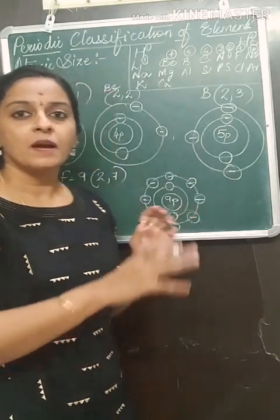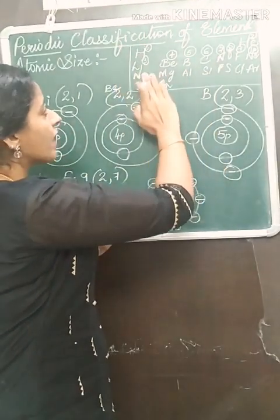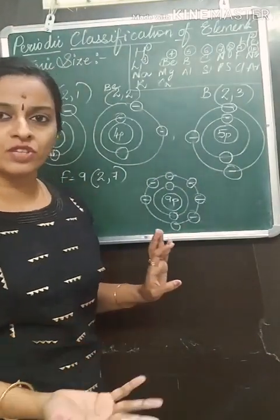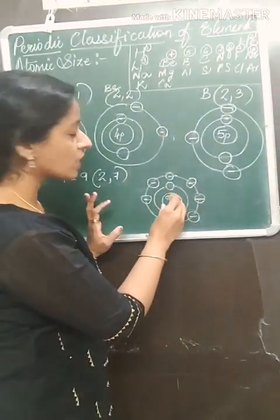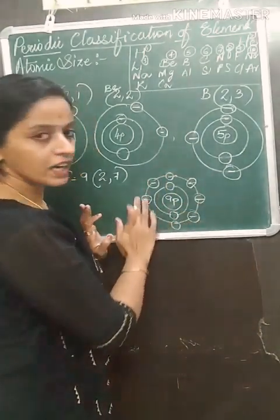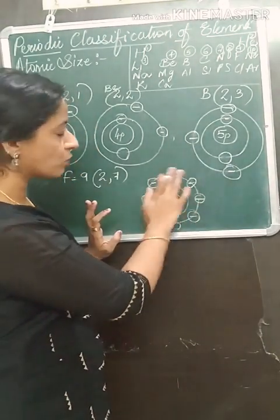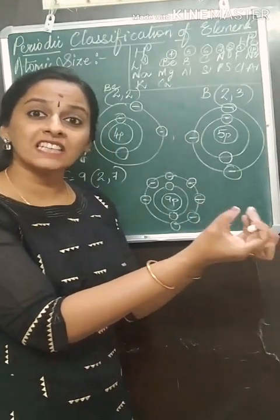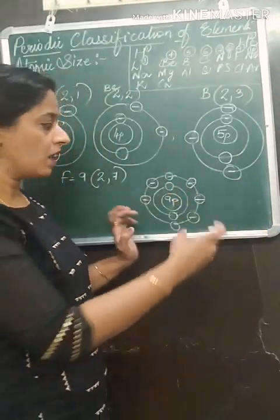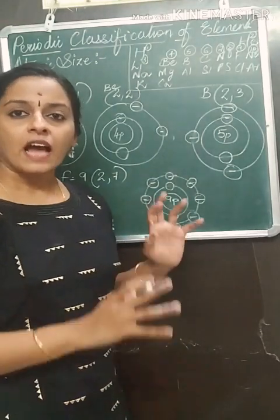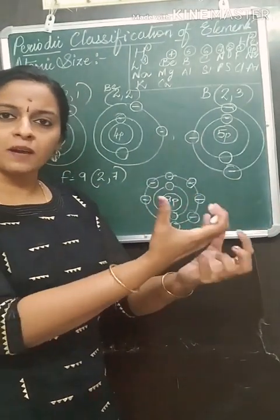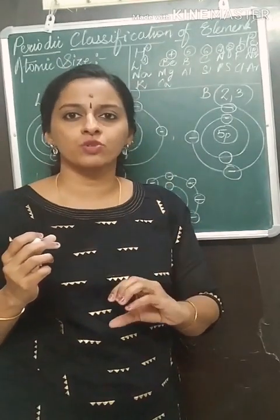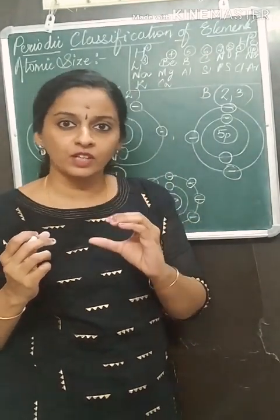The size of the atom reduces because as you go from left to right, every element gets more positive charge. This positive charge exerts more pull on the outermost electrons, so the outermost electrons experience more nuclear pull and therefore the size of the atom also reduces.